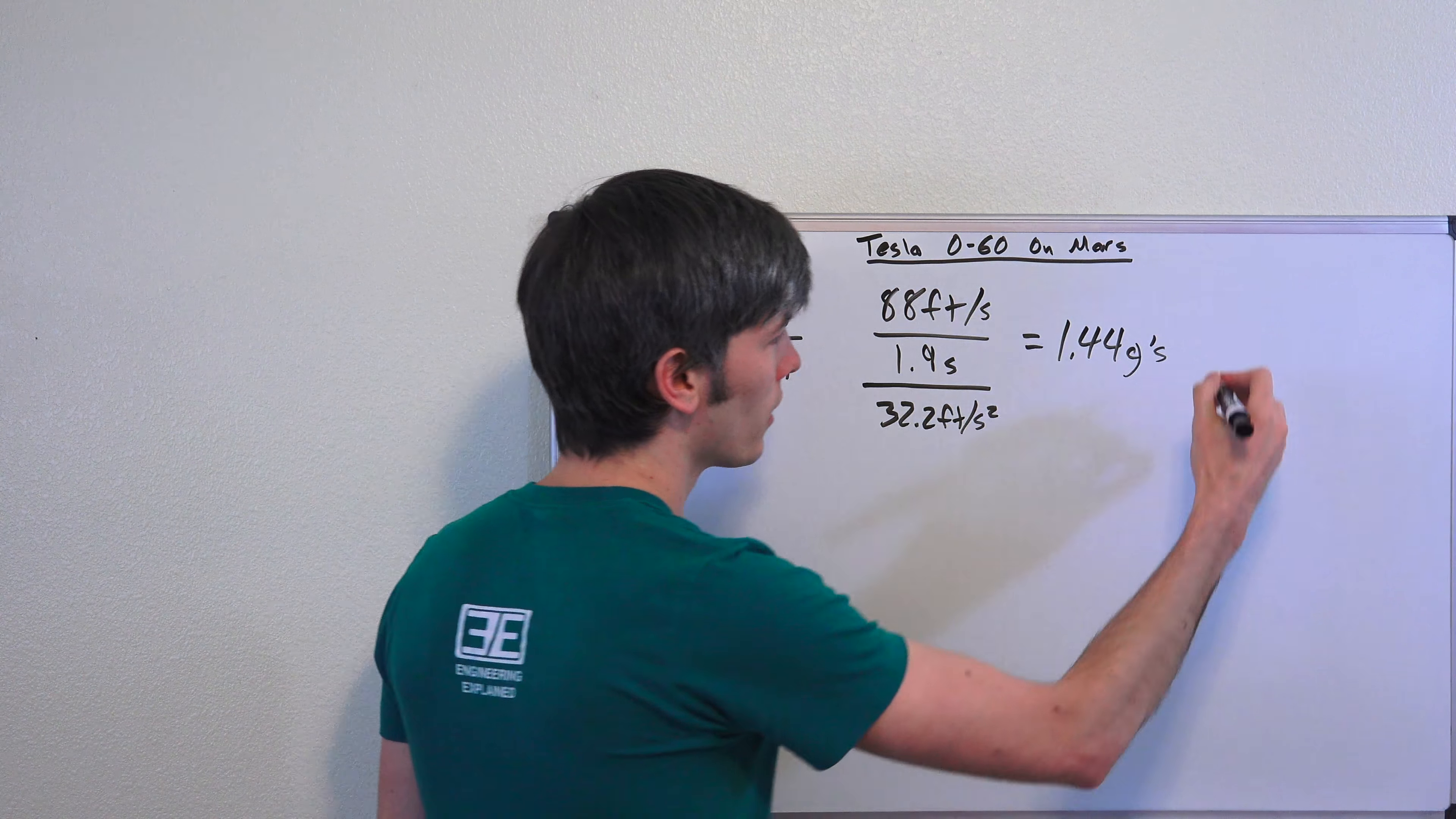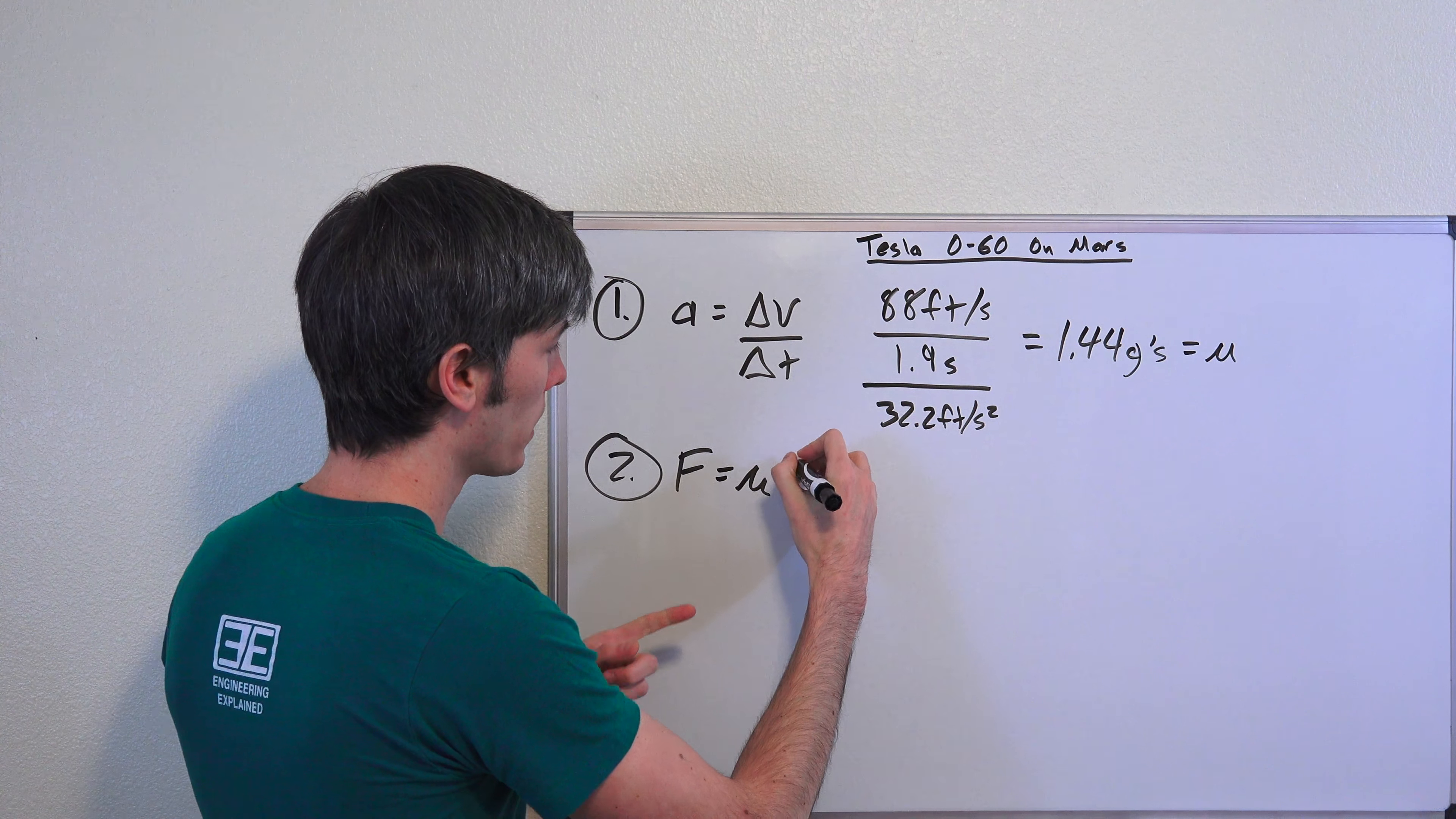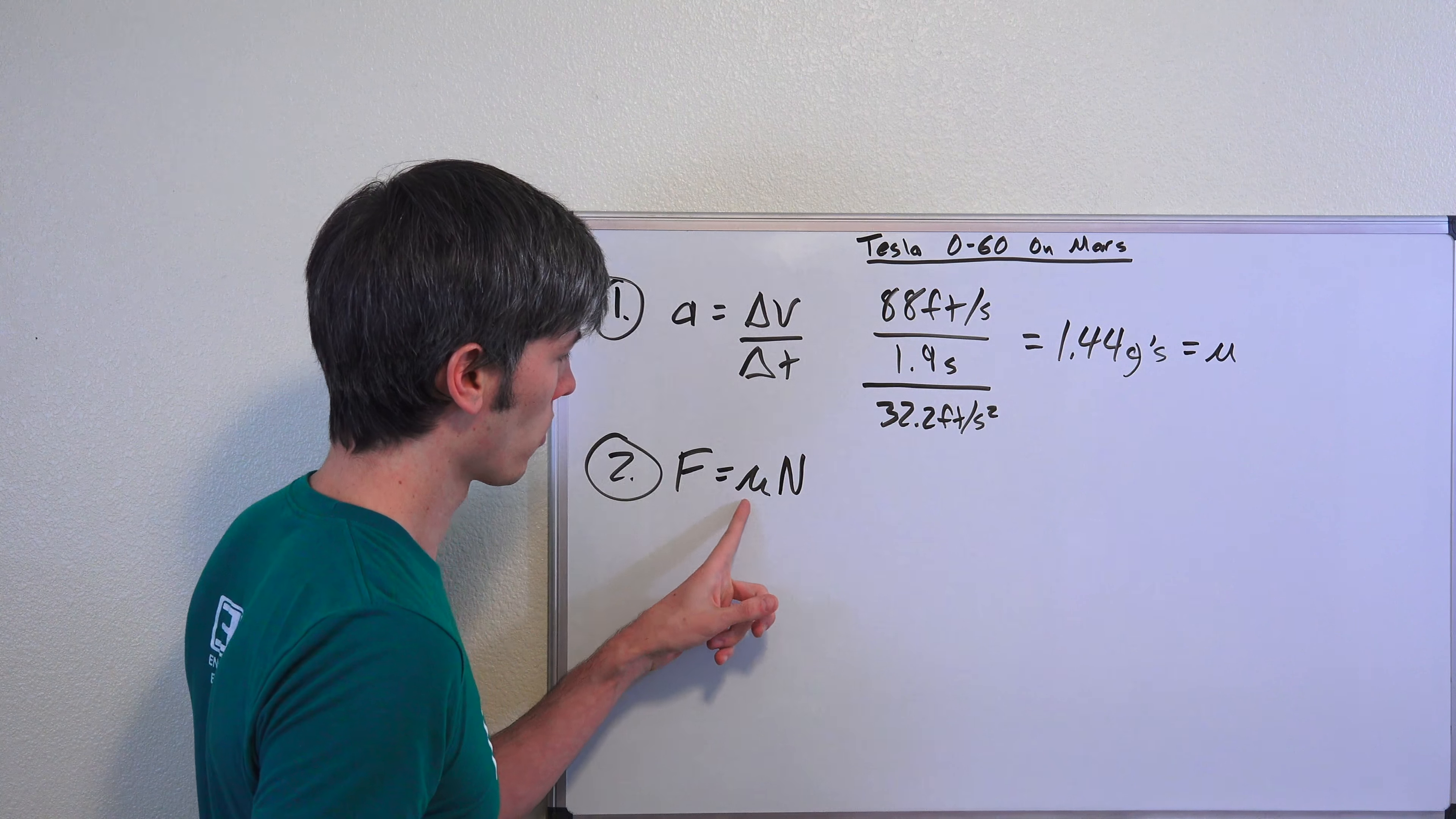And now we're all happy because we're talking about G's and not some obscure American unit that nobody likes to talk about, feet per second squared. 1.44 G's. Now this is equal to the tire's frictional coefficient. Wait, what? How does that happen?